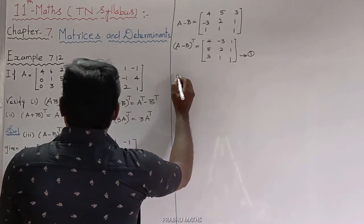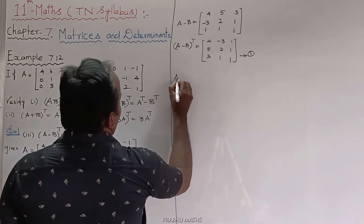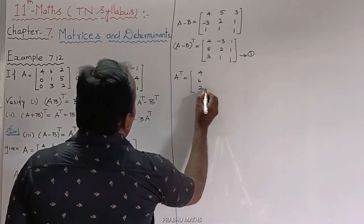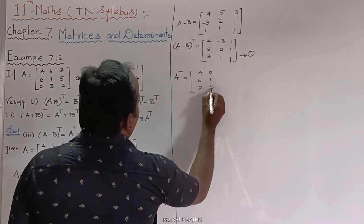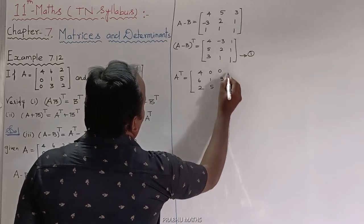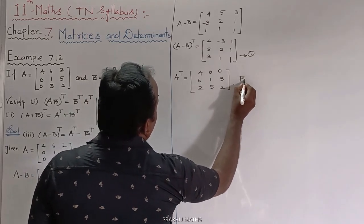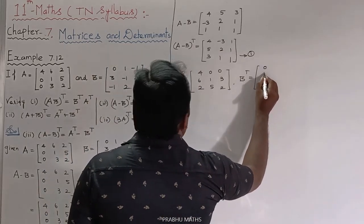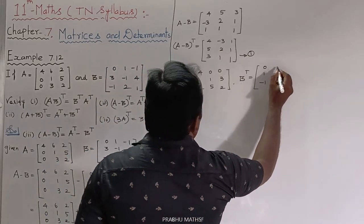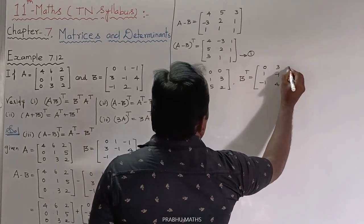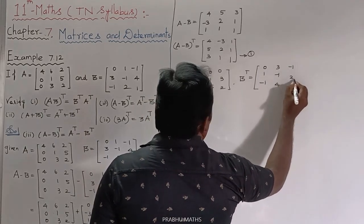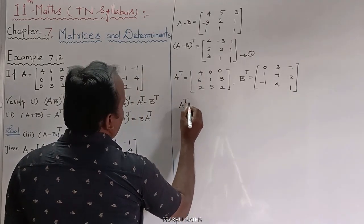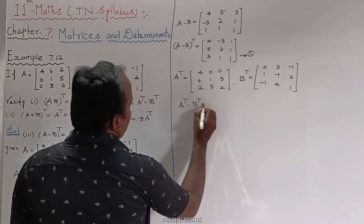Next, for the right-hand side: A transpose minus B transpose. The A transpose values are [4, 0, 0; 6, 1, 3; 2, 5, 2]. The B transpose values are [0, 3, -1; 1, -1, 2; -1, 4, 1].